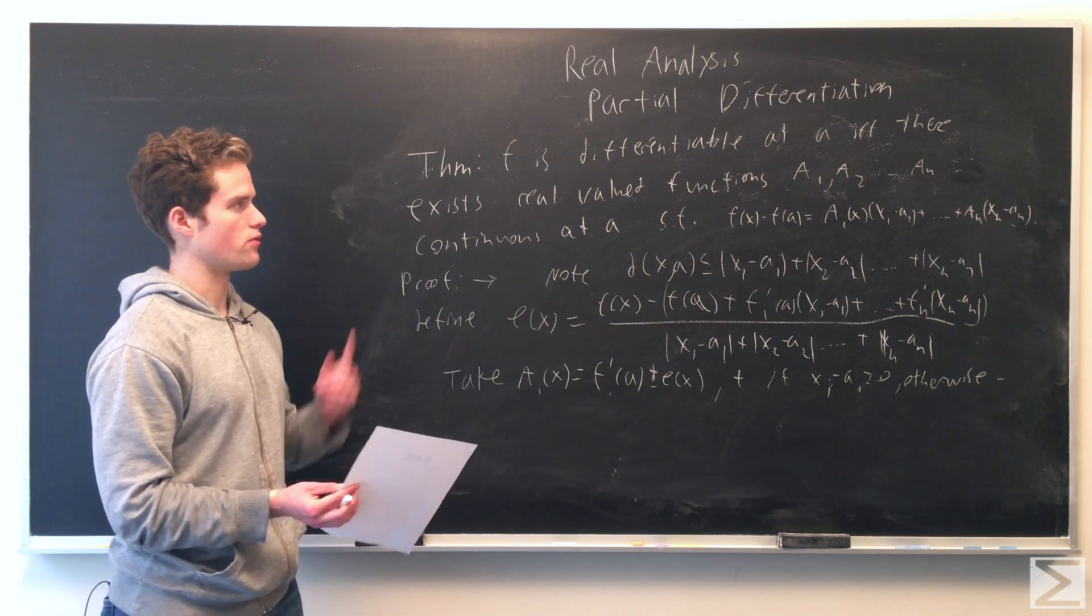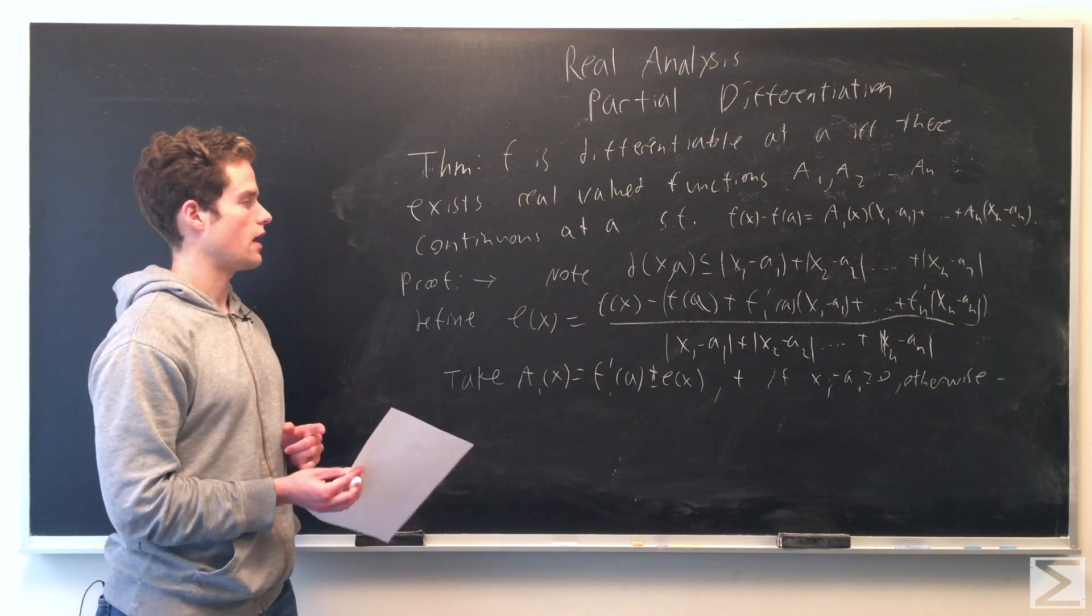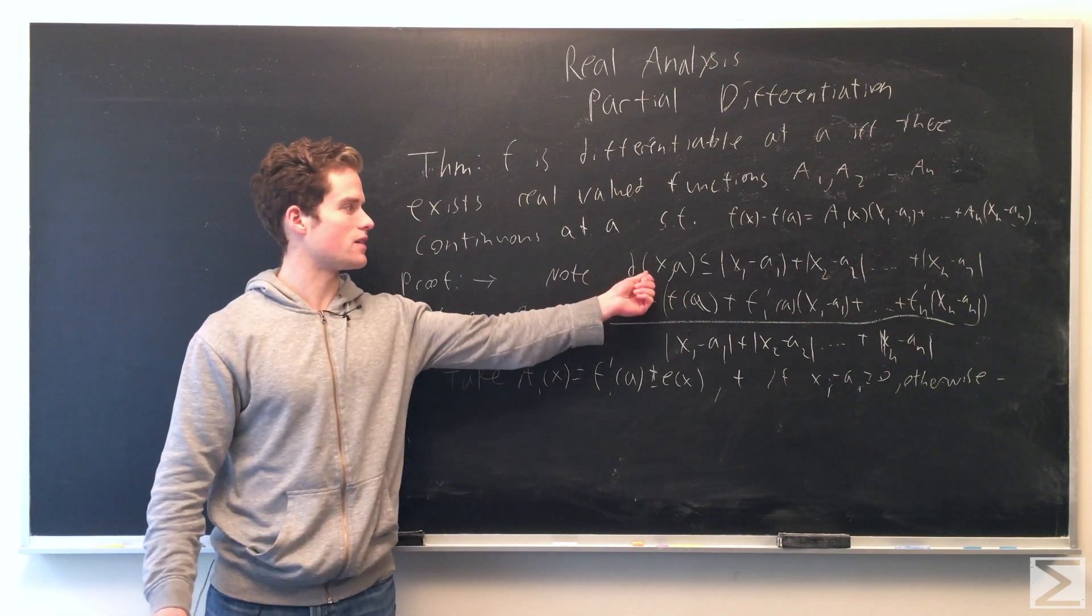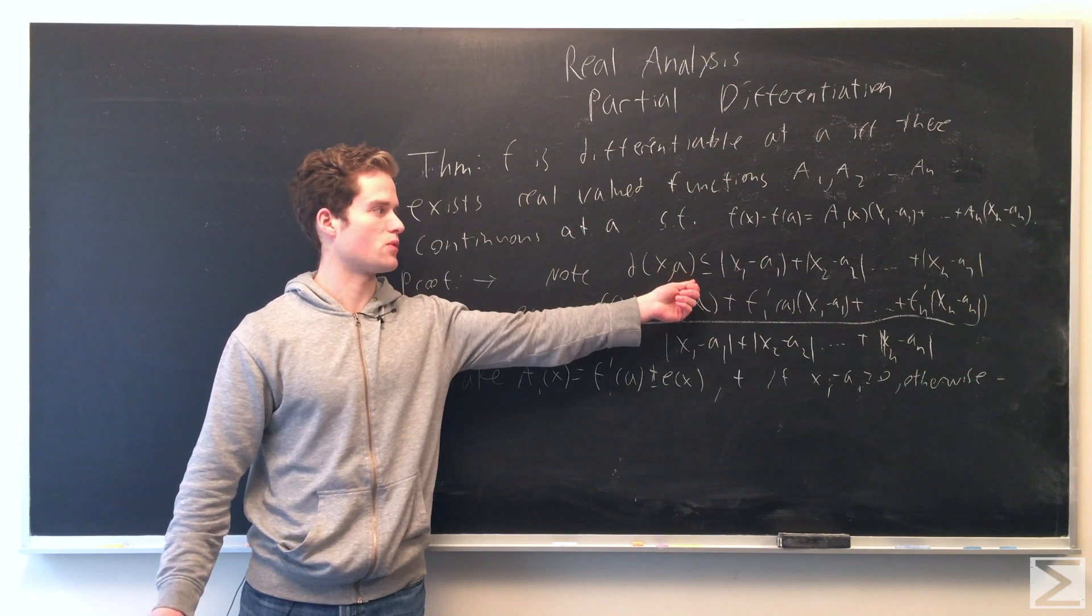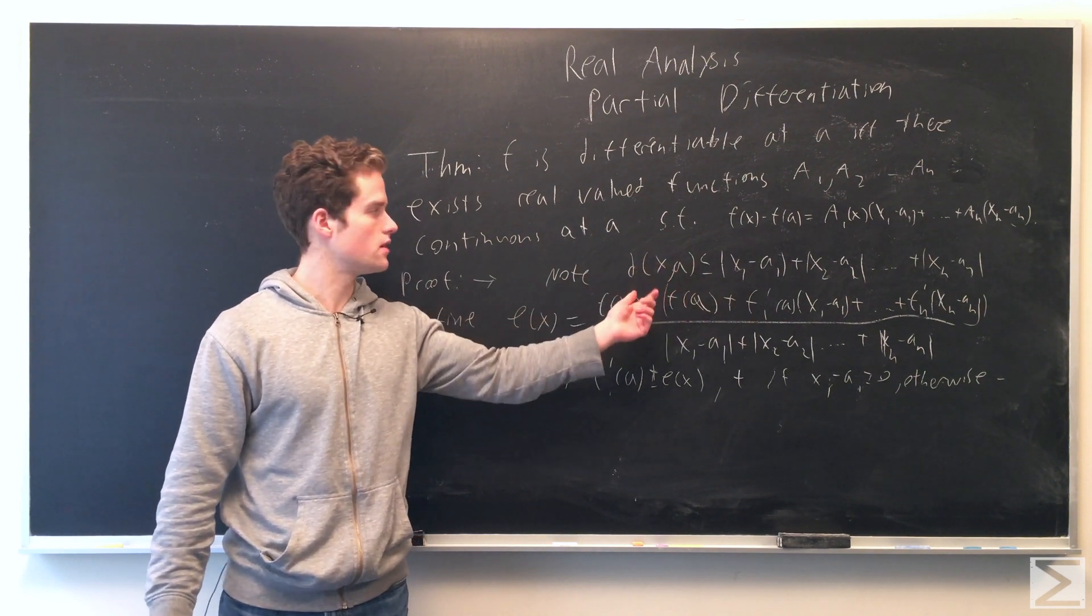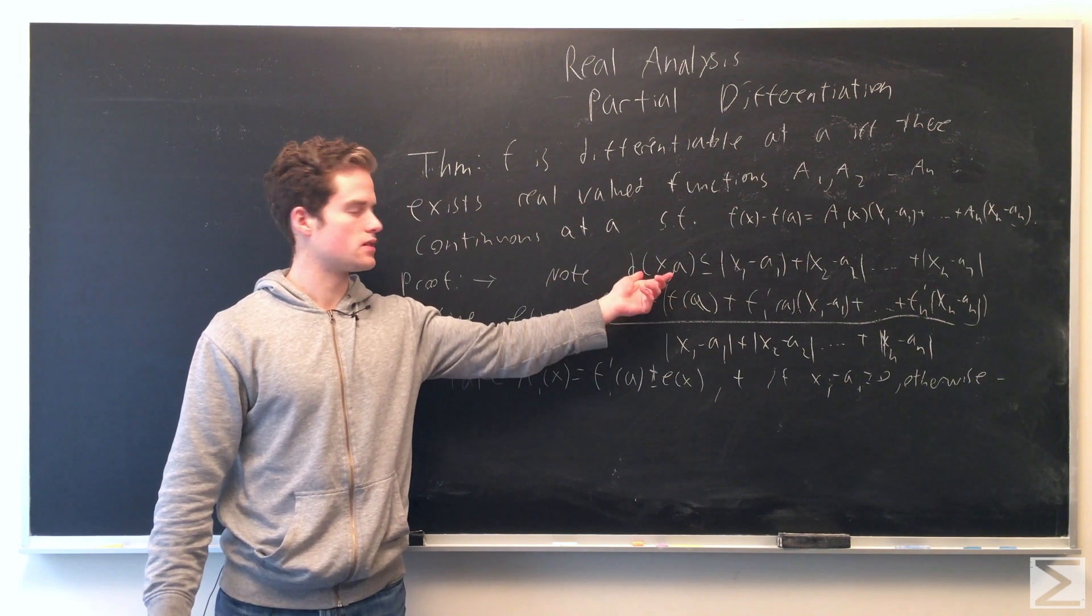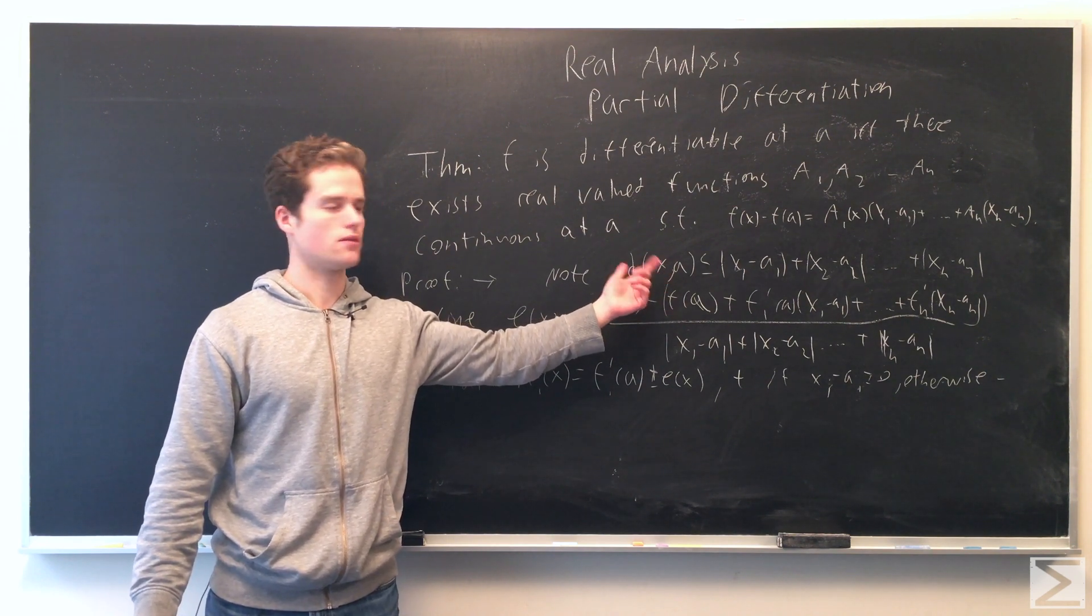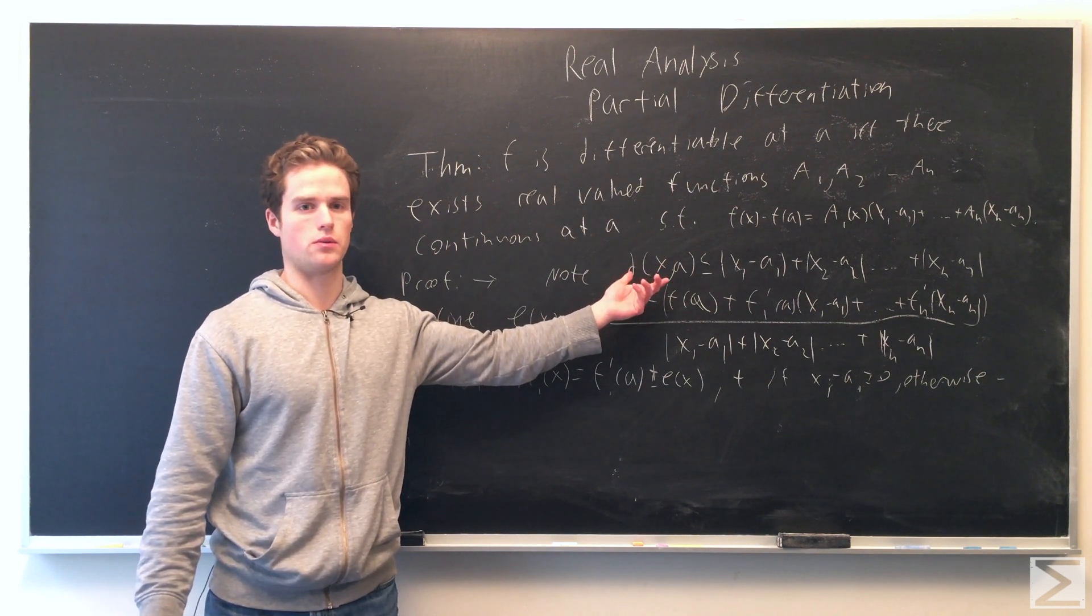To prove one direction, we assume f is differentiable. First note the distance between x and a is less than or equal to |x_1 - a_1| + |x_2 - a_2| + ... This is the triangle inequality, which extends to any dimension.